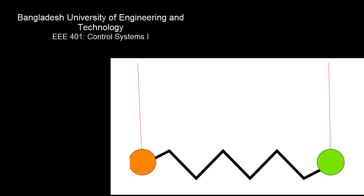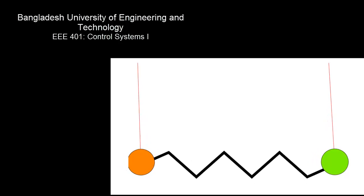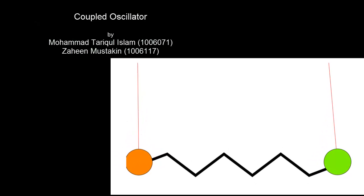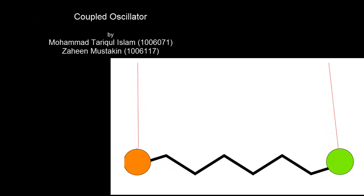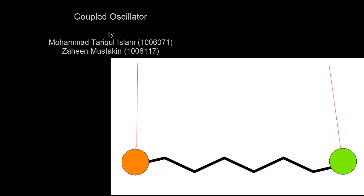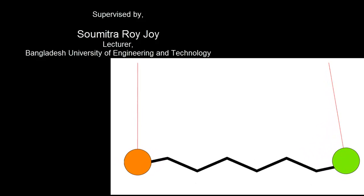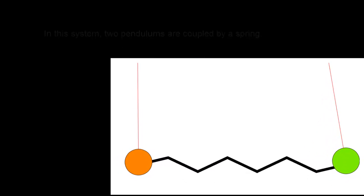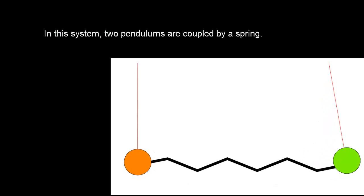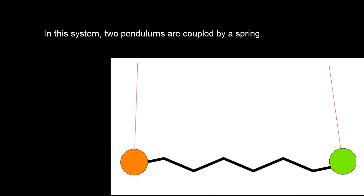Hello everyone and welcome to the screencast of our Control System 1 simulation project on Coupled Oscillator. The coupled oscillator we considered is a system with two pendulums suspended from a pivot, coupled using a spring. We shall first show a few modes of an actual spring-coupled system, then show our implementation. The video of the actual physical system belongs to Dr. Dan Russell from Pennsylvania State University.